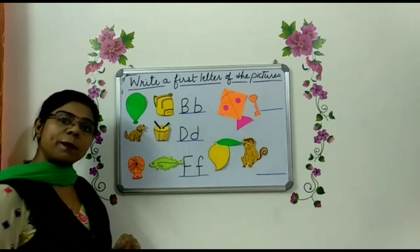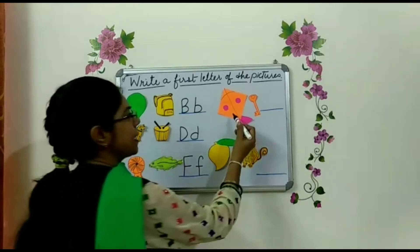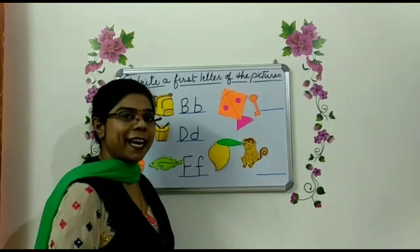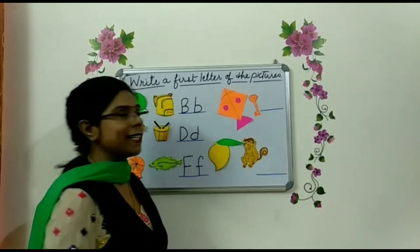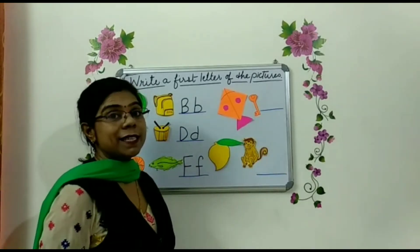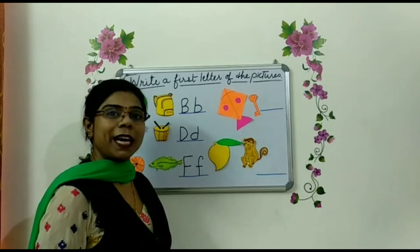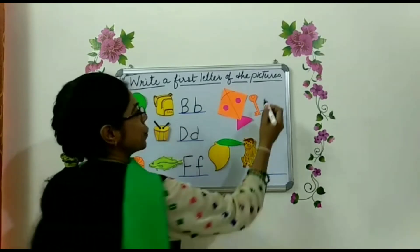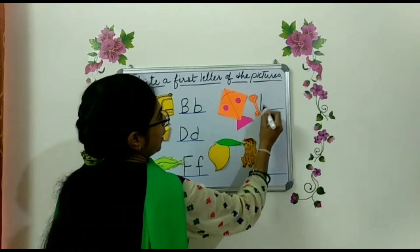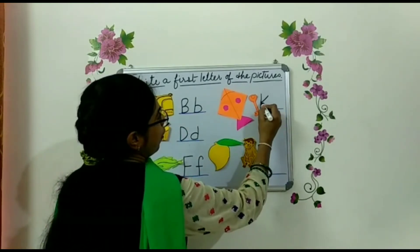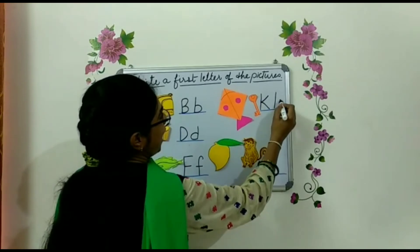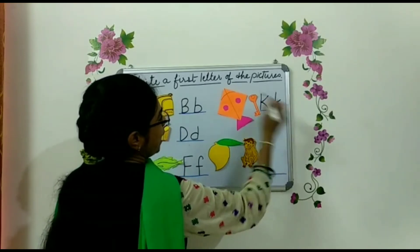Now coming to the next picture. What is this? Yes, this is K for kite. And this one? This is K for key. So now K for kite, K for key.